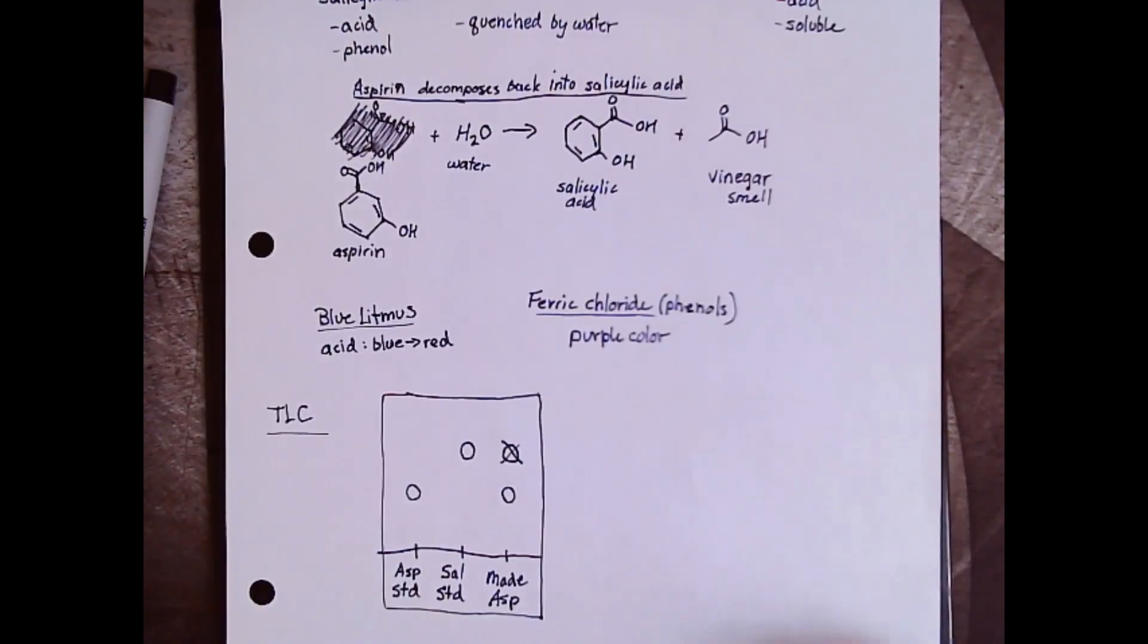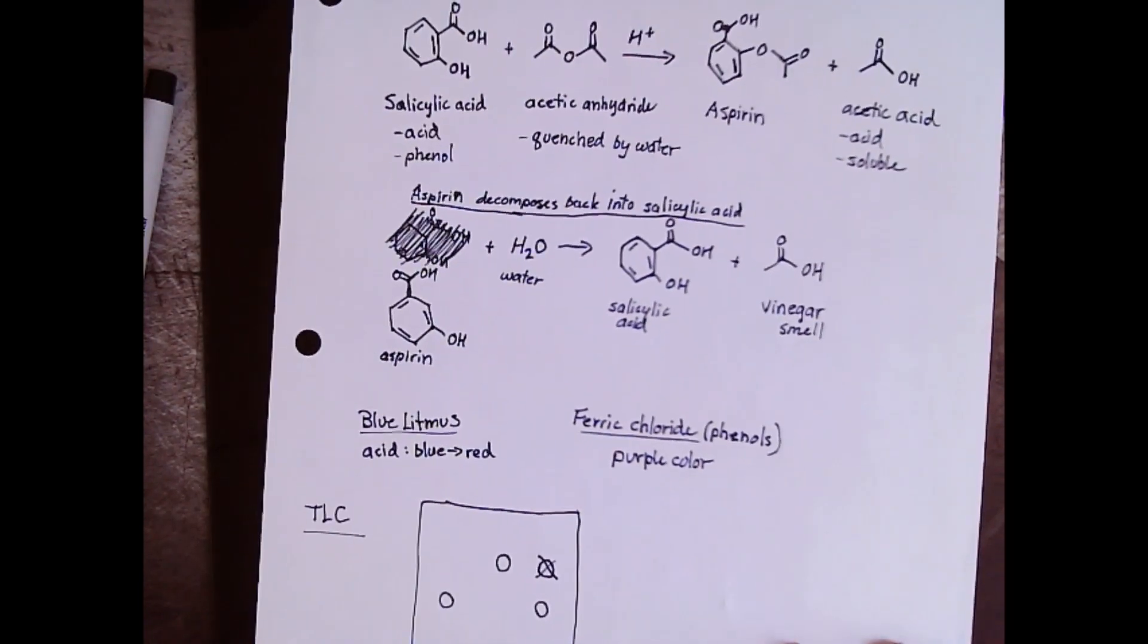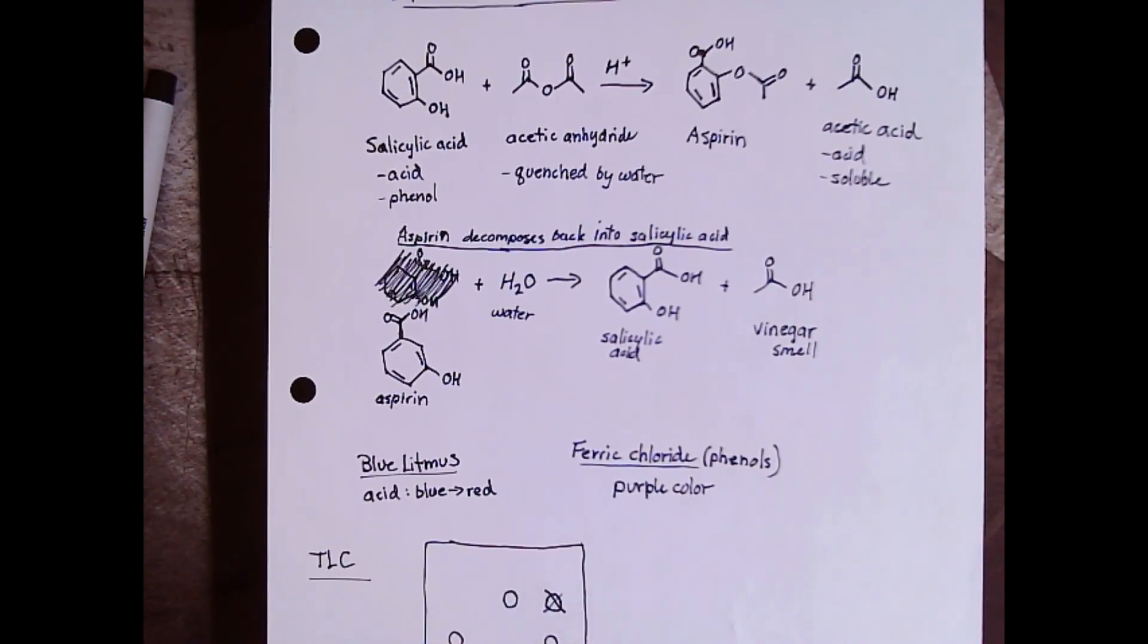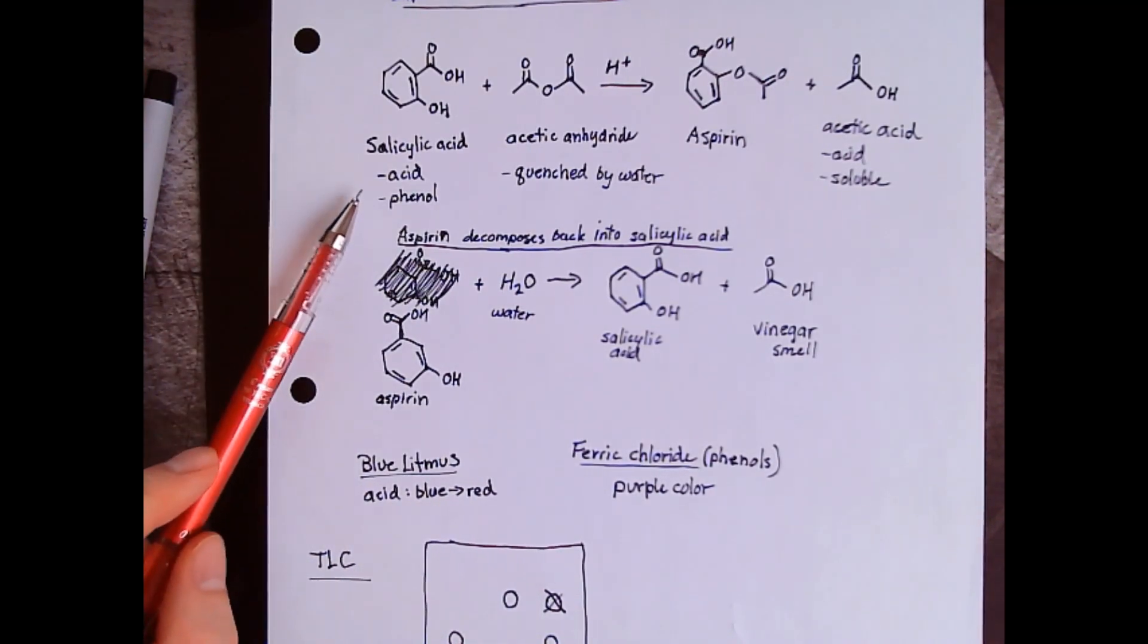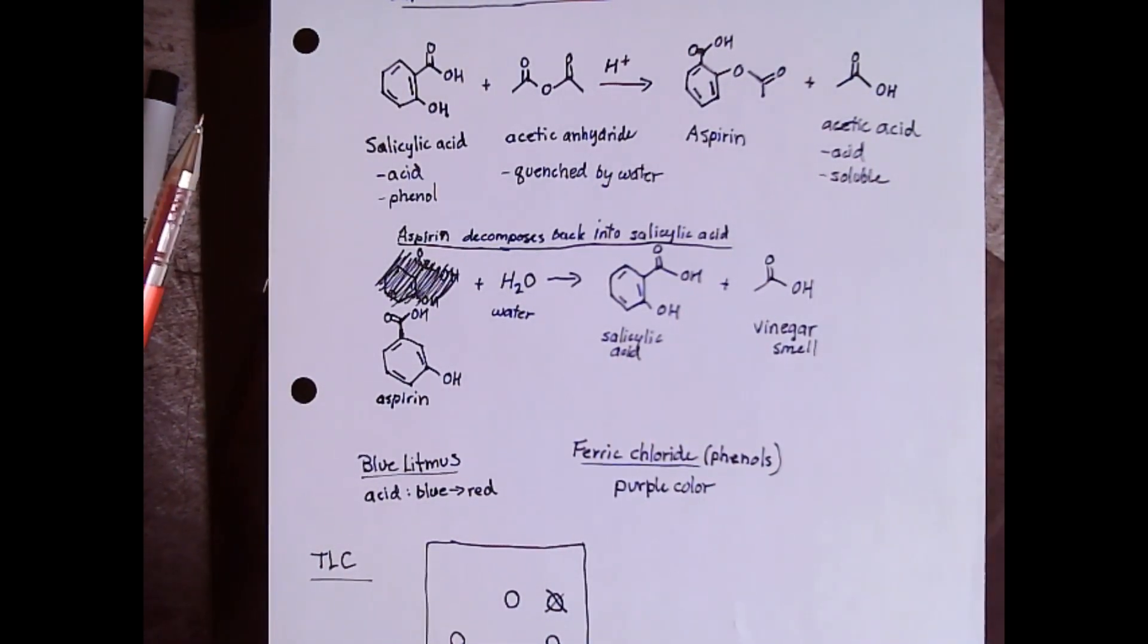For this lab, we'll be doing a few different analyses. The blue litmus paper test - we're looking for if there is an acid present in the final product. If there is an acid present, it'll turn the blue litmus paper to red. Salicylic acid and acetic acid are two obvious acids - if either of